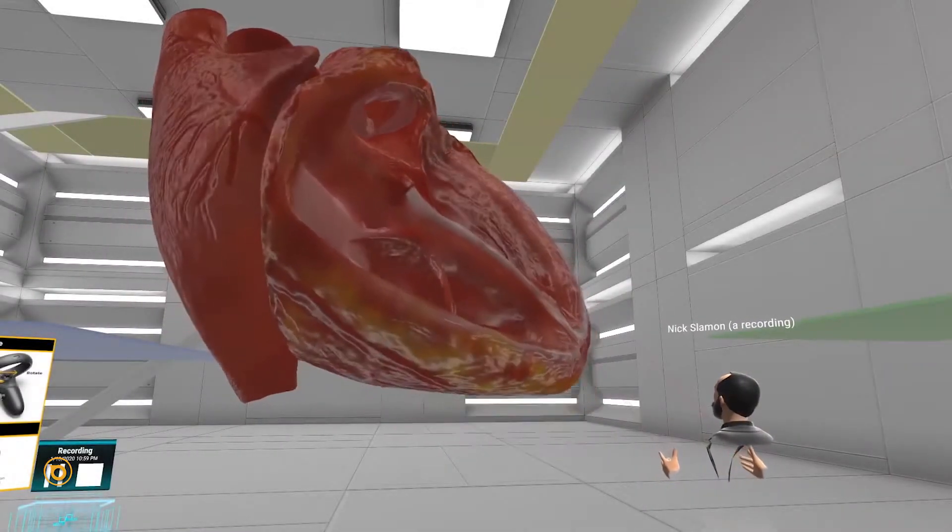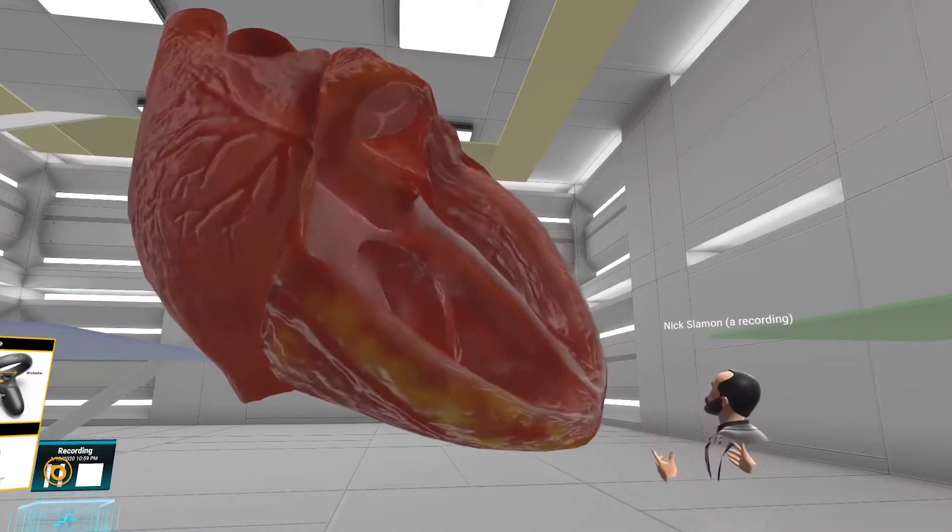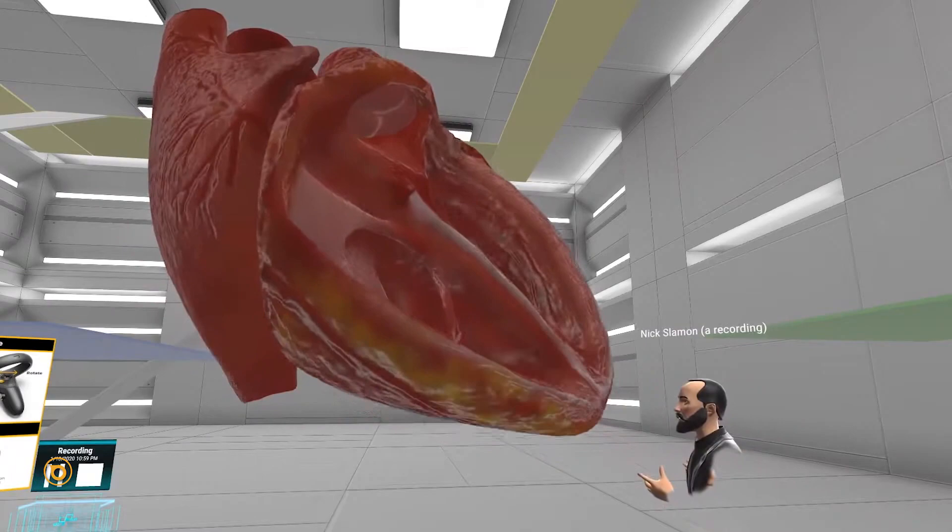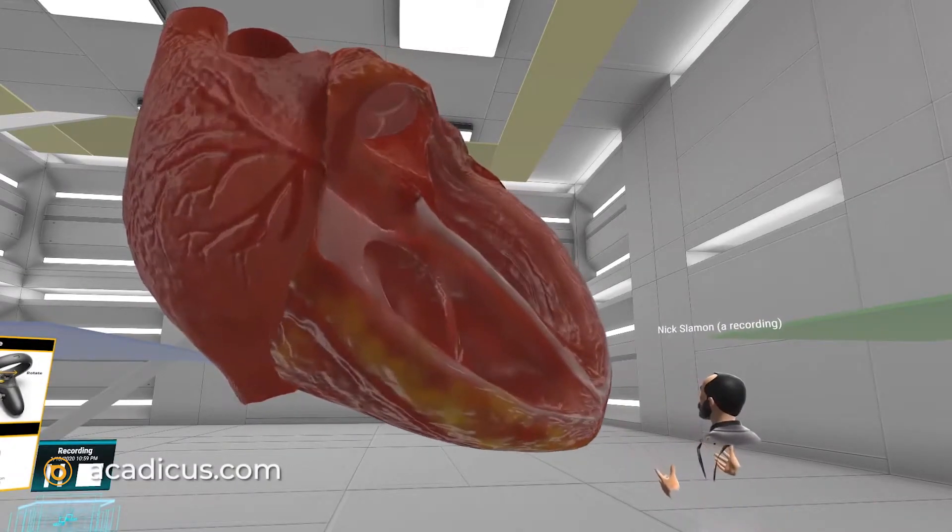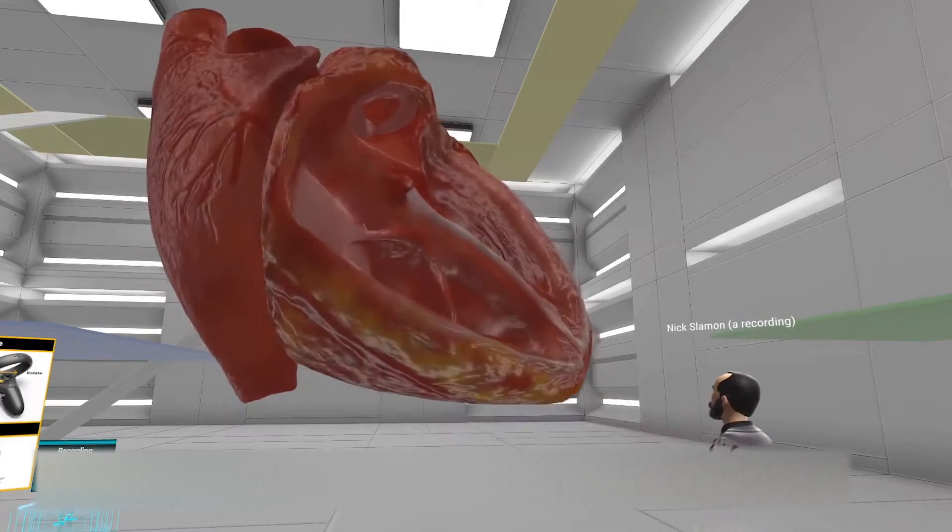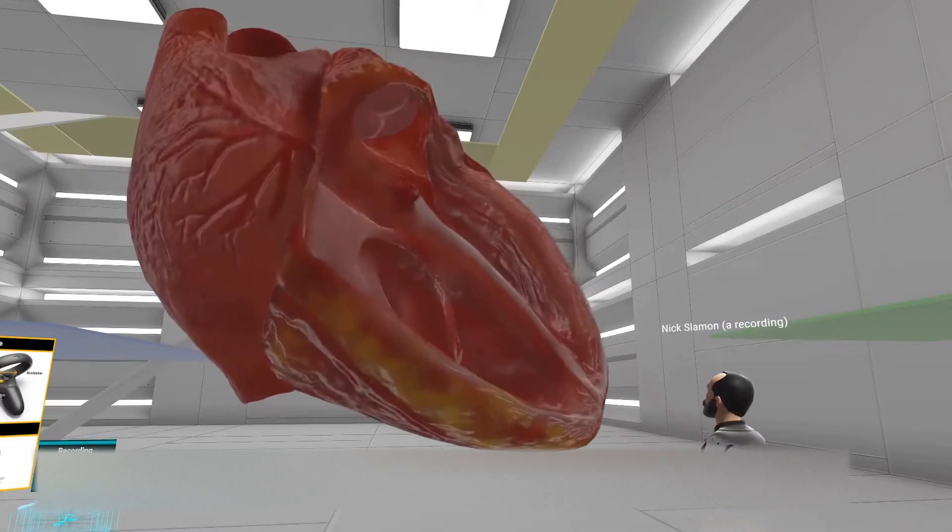The right ventricle is not very thick and not very muscular. When you compare it to the left ventricle that has to pump out of the aorta and under enormous resistance all the way to the fingers and toes, it's much thicker, much more muscular.